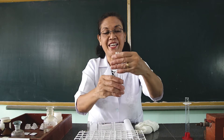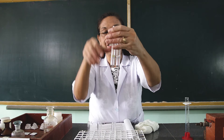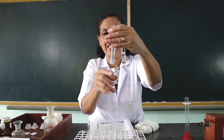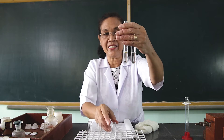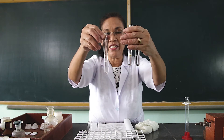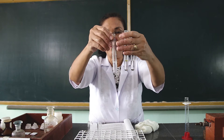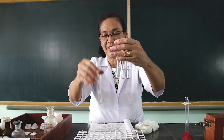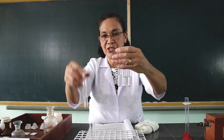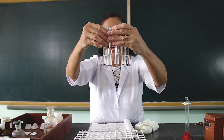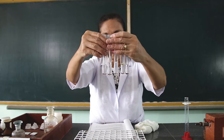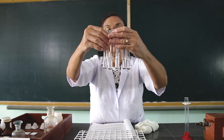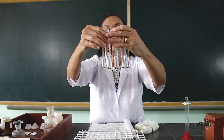I would like you to see again the results. The first test tube contains acetic acid with water. This is the oleic acid in water. This is the stearic acid in water. This is the succinic acid in water and the benzoic acid in water. I want you to compare the five test tubes containing the different carboxylic acids to see whether they are soluble in water or not.